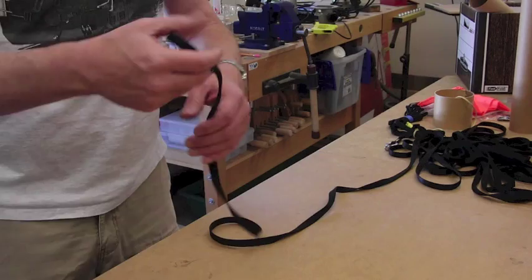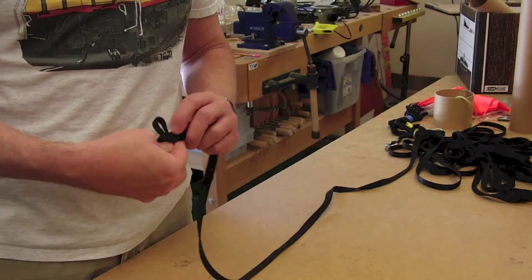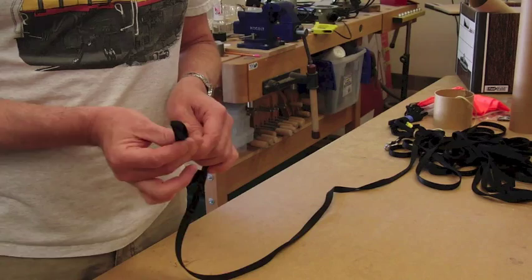Now the simplest way to finish an end is just to tie a knot. We can make a loop, giving ourselves some overlap, and then use a plain old overhand knot to tie a loop.